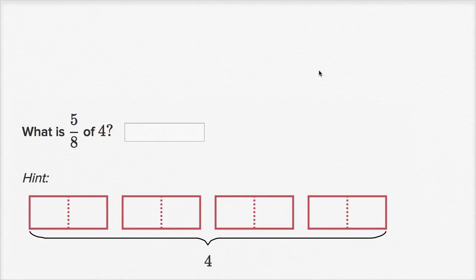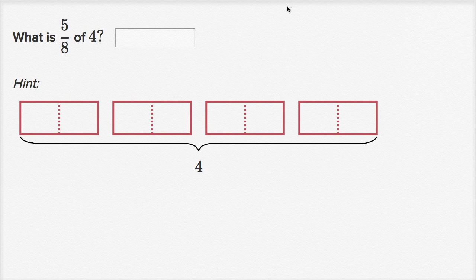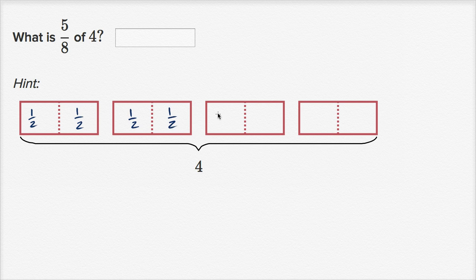Let's do another one, and this one's a little bit more interesting. What is five-eighths of four? We have drawn here four holes, each split in two. So this is one-half, this is another one-half — repeated across all four holes, giving us eight halves total. Each half is actually one-eighth of the entire four holes.